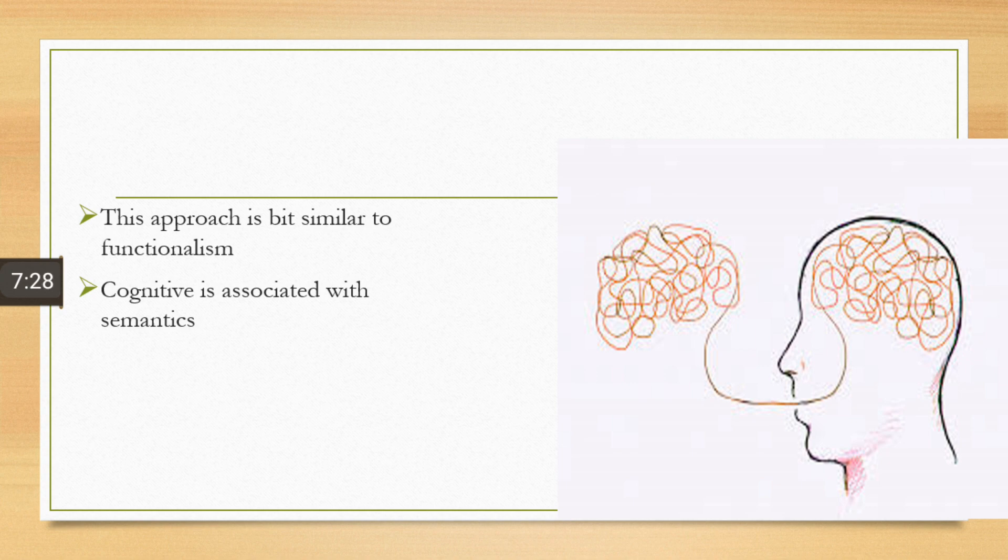Cognitivism is associated with semantics. We talked about the pragmatic meanings and denotative meaning in the previous videos as well.